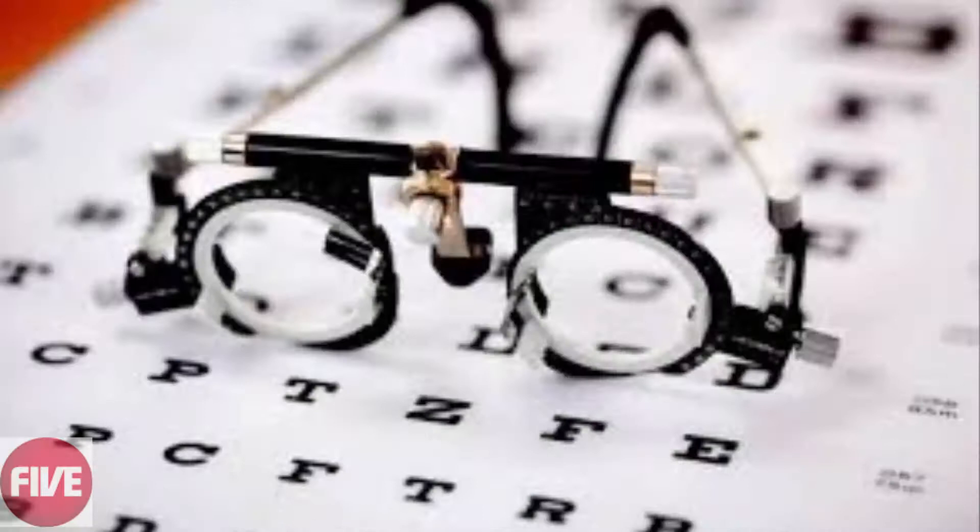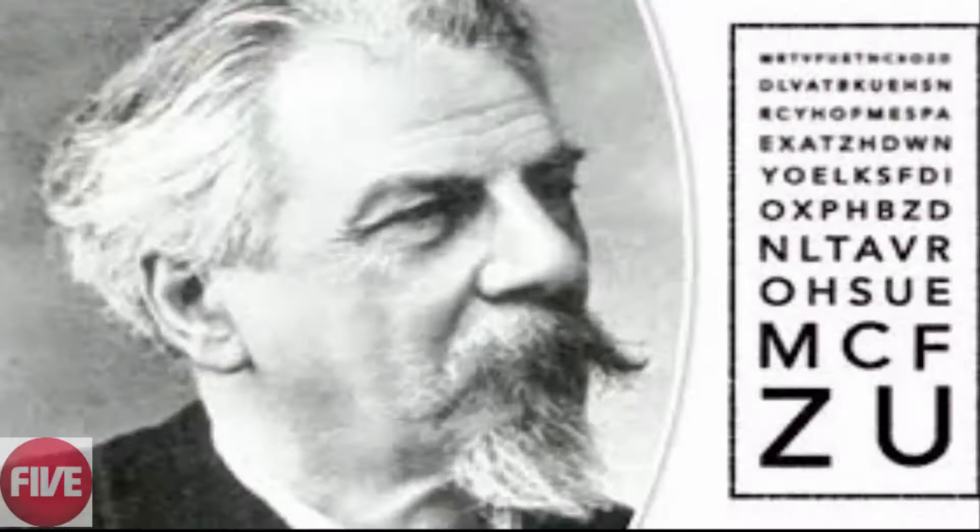1. Monnoyer Invented The Diopter, The Unit of Measurement for Vision. In 1872, Monnoyer made his biggest contribution to ophthalmology, which is the branch of medicine concerning the eyeball. He developed the diopter, or dioptre in the U.K. Diopter is the unit of measurement for the optical power of the lens.